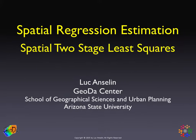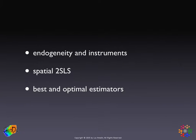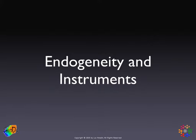In this third set of slides, we'll consider spatial two-stage least squares estimation for the spatial lag model. We'll have three parts. First, I'll discuss the concept of endogeneity in the spatial lag model, which we've already met in the discussion of maximum likelihood, but here in the specific context of choosing instruments. Then I'll outline the actual spatial two-stage least squares estimator, and finally I'll touch on more advanced material dealing with best and optimal estimators. First: endogeneity and the choice of instruments.